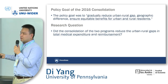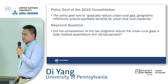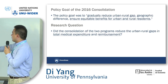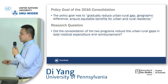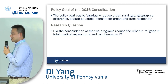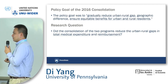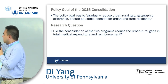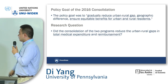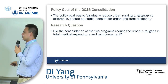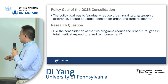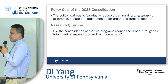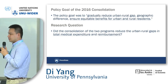The policy goal of the consolidation was to gradually reduce urban-rural inequality in healthcare, particularly among urban and rural residents. The natural research question is: did this consolidation really reduce the urban-rural inequality — particularly the urban-rural gaps in total medical expenditure and reimbursement? I chose total medical expenditure because it measures medical utilization, and reimbursement measures the financial protection of the social health insurance program.